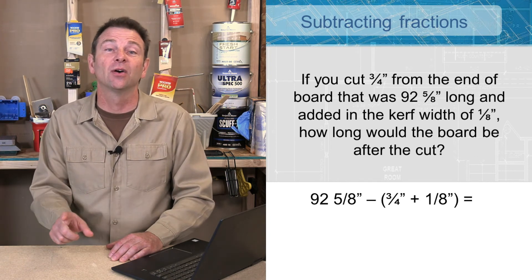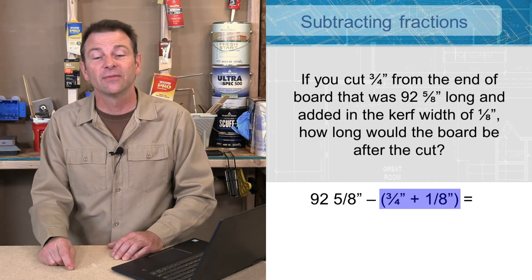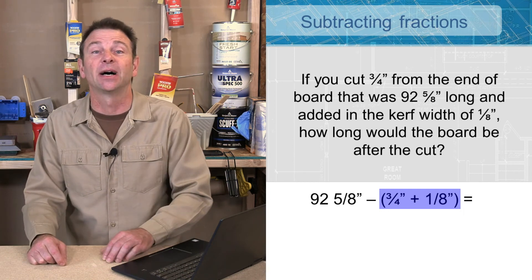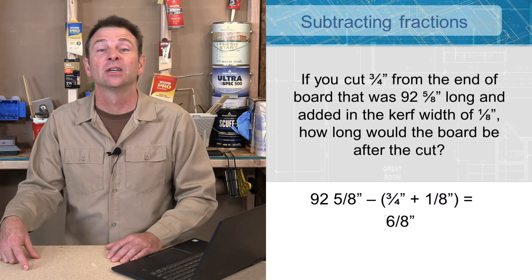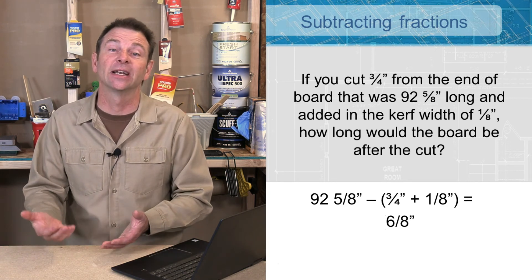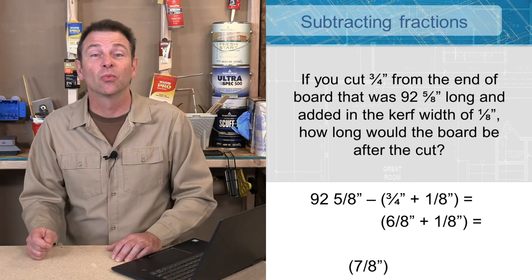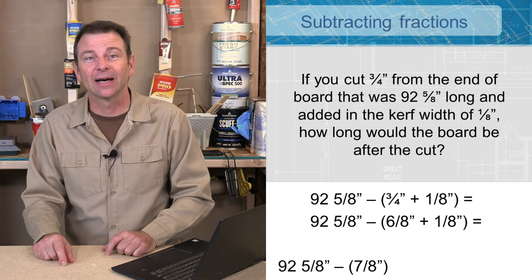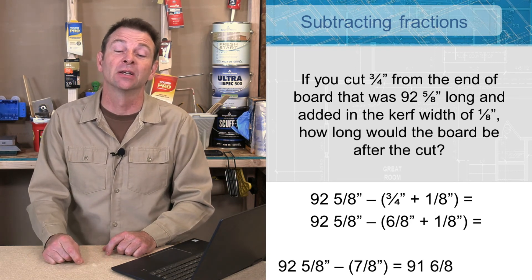First I want to know the total dimension I'm subtracting from the original length of the board. I'm going to convert these fractions to have common denominators. We're going to keep our one-eighth inch and change our three-quarters to match it — three-quarters can be called six-eighths, just doubling both numbers. Now we have common denominators. Six-eighths and one-eighth is seven-eighths. We need to remove that from our 92 and five-eighths, and we're going to end up with 91 and six-eighths. We can simplify six-eighths to give us 91 and three-quarters — that is our answer.